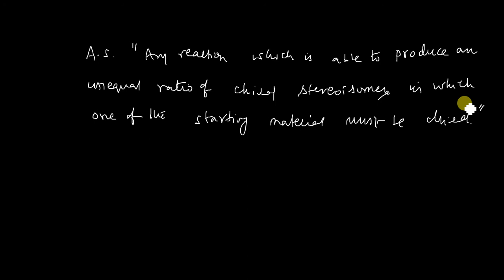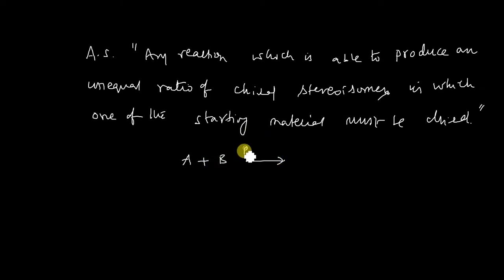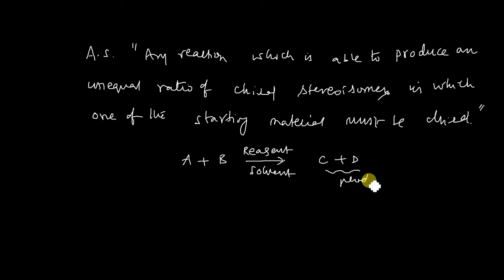For example, let us take an organic synthesis. In organic synthesis, we start with the treatment of starting materials — substrates — with a reagent in a particular solvent, which gives you products. The end substances are called products, and these are called starting materials. When you treat the starting materials with a reagent in solvent, these give you products. This is all about general organic synthesis.